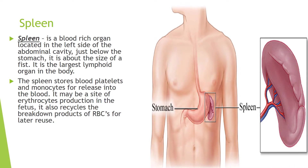The spleen is a blood-rich organ located on the left side of the abdominal cavity, just below the stomach. It is about the size of a fist and is the largest lymphoid organ in the body. The spleen stores blood platelets and monocytes for release into the blood. It may be a site of erythrocyte production in the fetus, and it also recycles the breakdown products of red blood cells for later reuse.